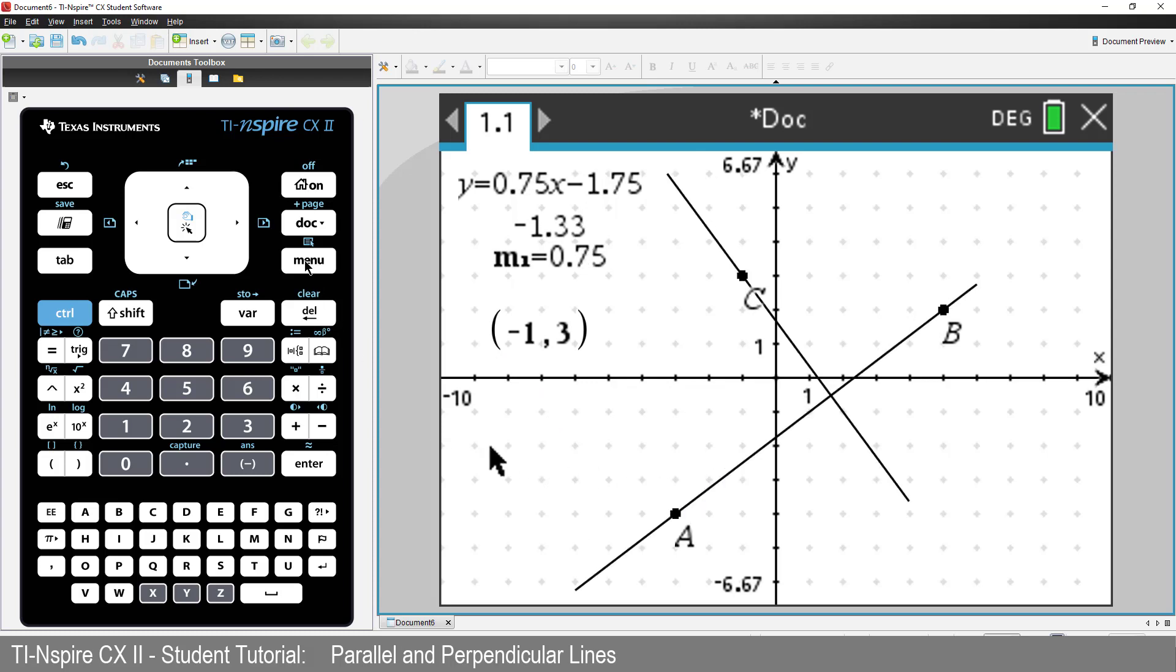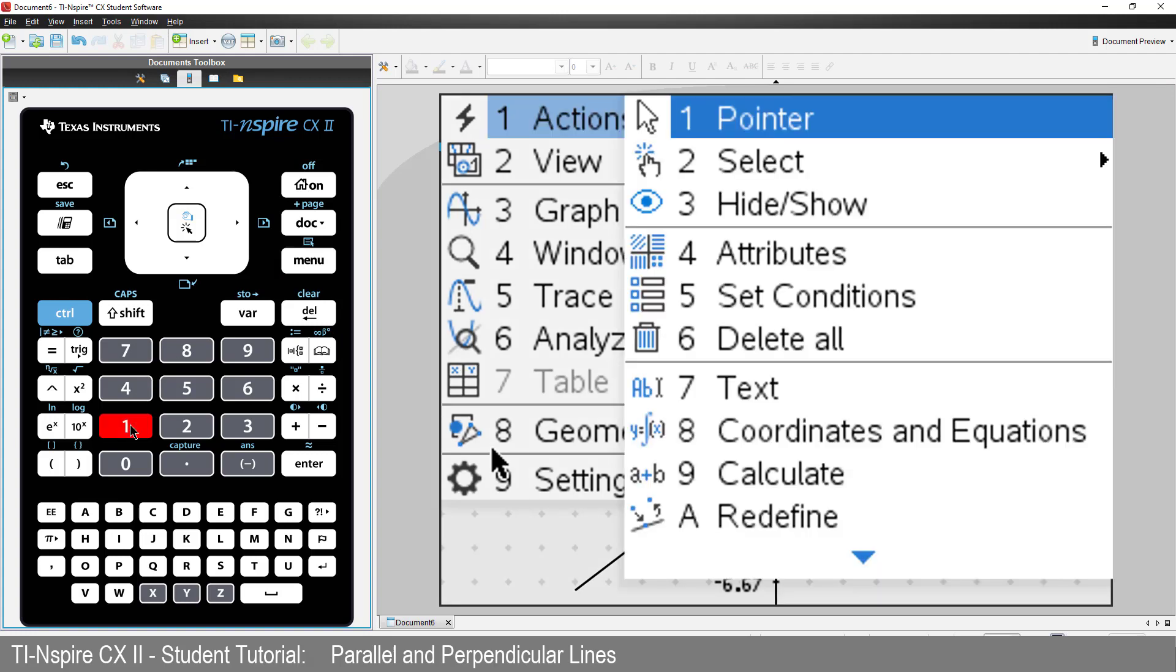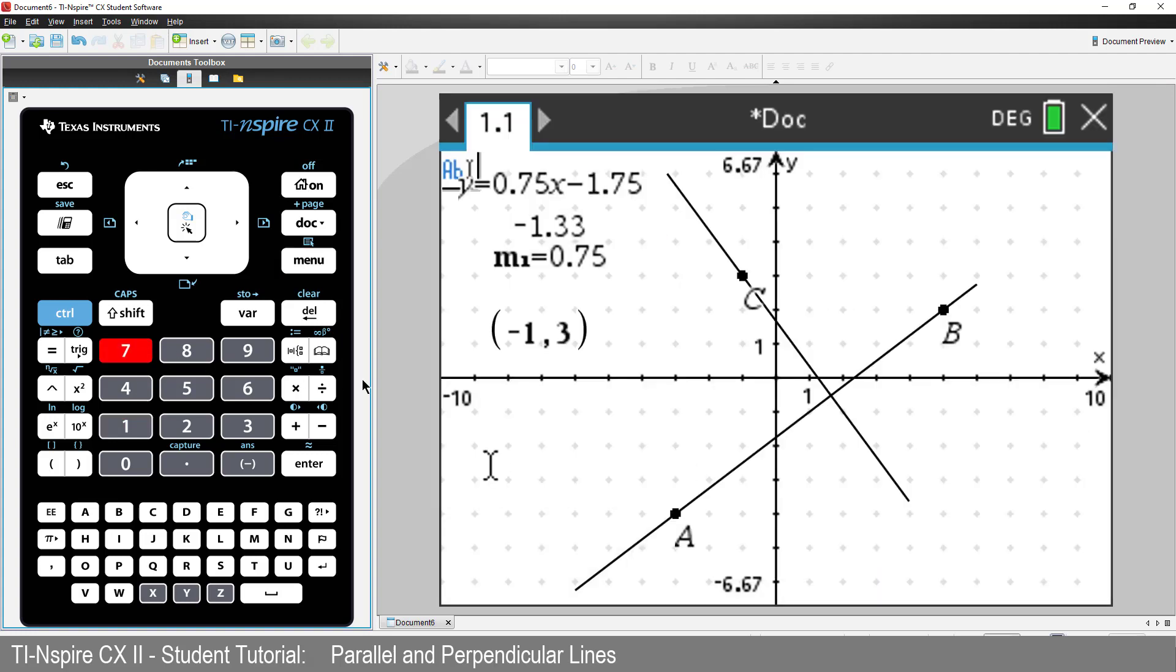Let's try a calculation. Press Menu, Actions, and select Text. Now we can type an expression.